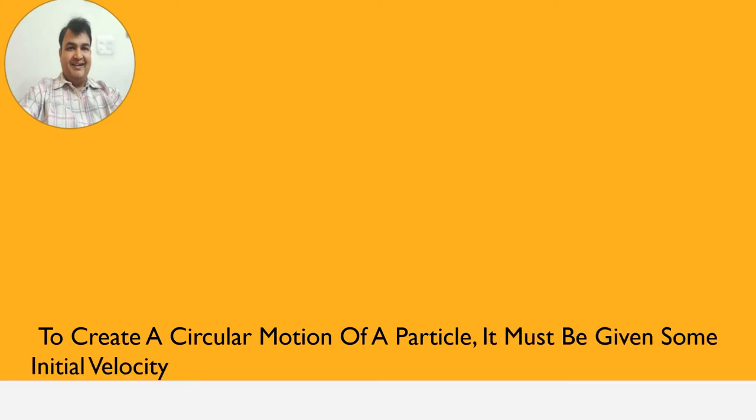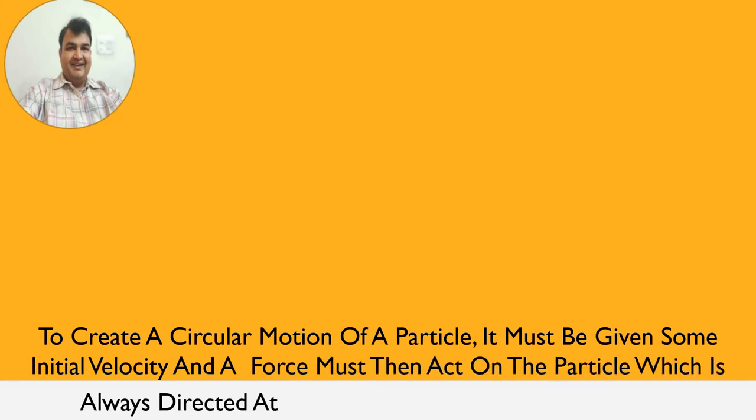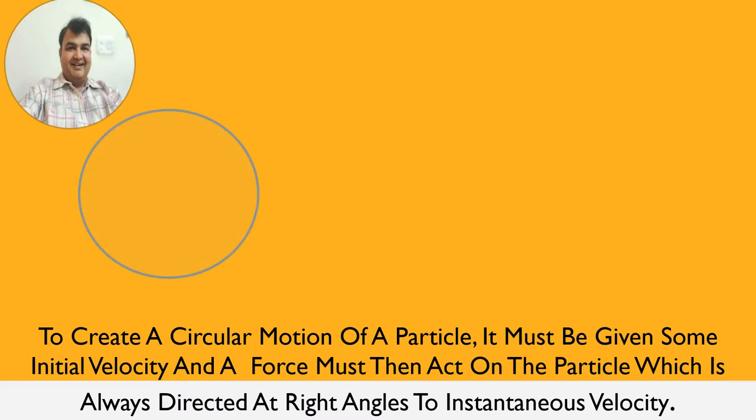Now we will discuss the origin of circular motion. How does circular motion originate? To create a circular motion of a particle, it must be given some initial velocity first of all, and a force must then act on the particle which is always directed at right angles to the instantaneous velocity. There is a circular motion we have to start. There should be a force towards the center and there should be a velocity tangentially. Look at the diagram: force is always perpendicular to the instantaneous speed.